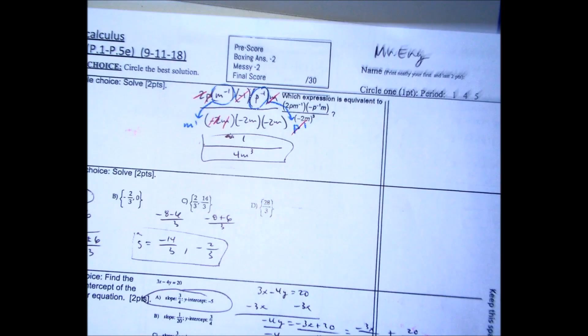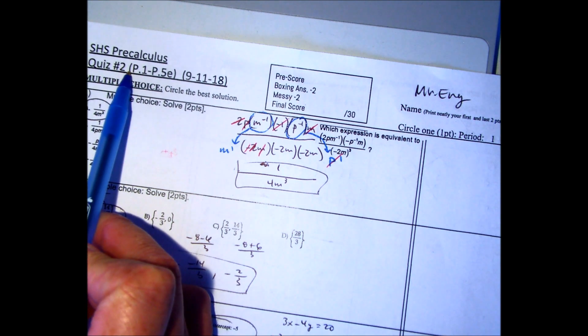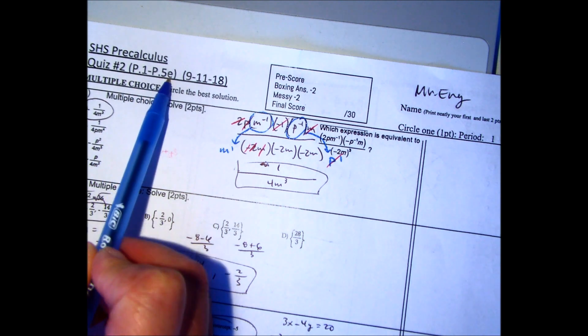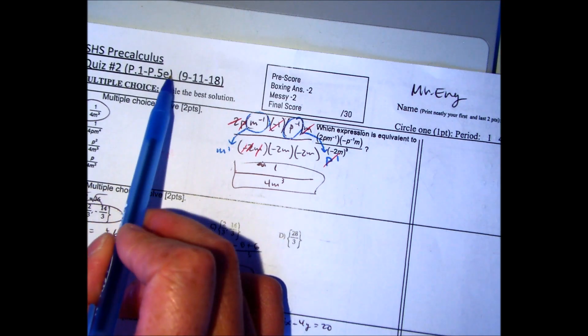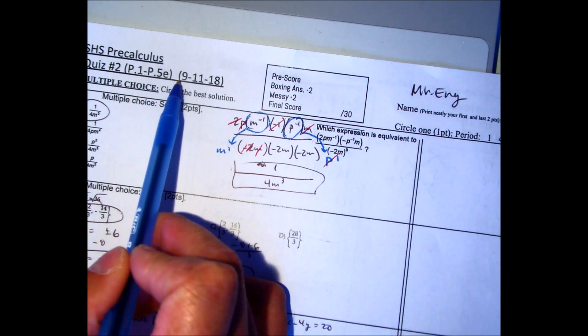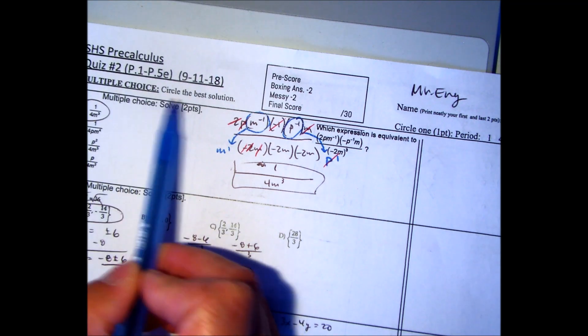Hi, this is Mr. Ng going over your pre-calc quiz number two, Chapter P, section one to about five E. I think I included factoring, but not quadratic formula or square root, I assume. September 11, 2018, multiple choice circle the best solution.